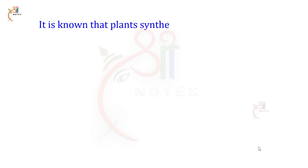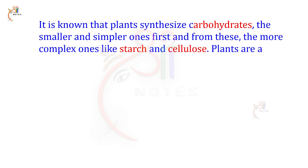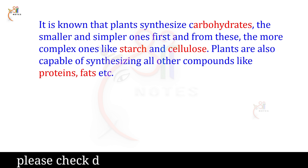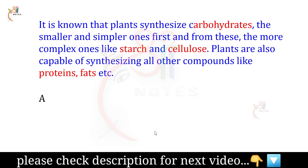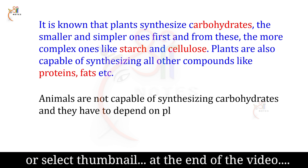It is known that plants synthesize carbohydrates — the smaller and simpler ones first, and from these, the more complex ones like starch and cellulose. Plants are also capable of synthesizing all other compounds like proteins and fats. Animals are not capable of synthesizing carbohydrates and have to depend on plants for the same.